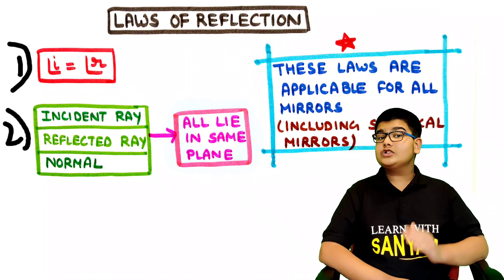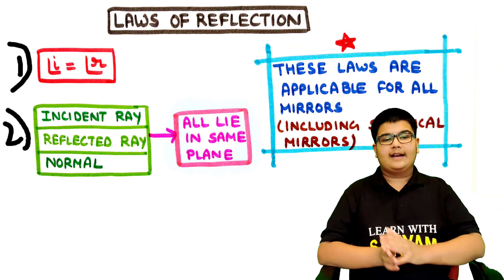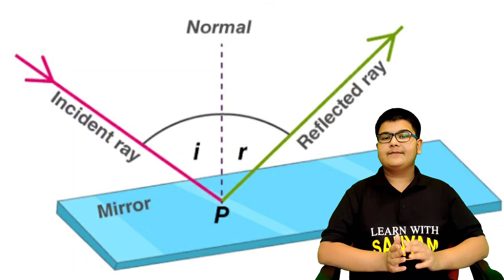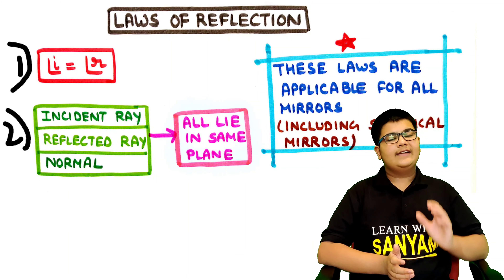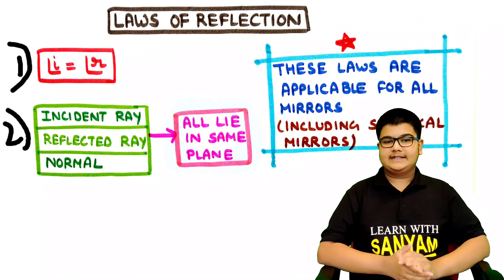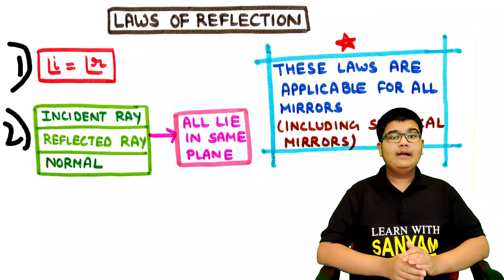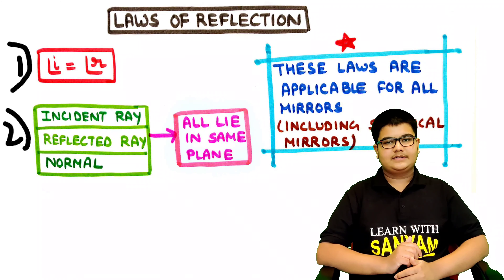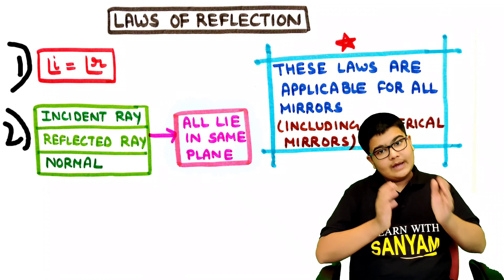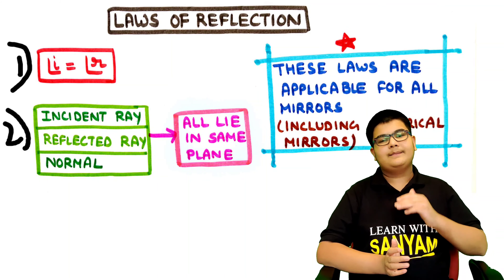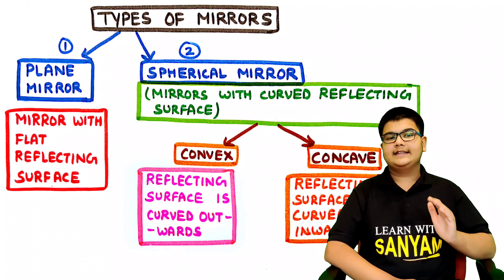Now after learning about all the terms associated with reflection of light, let's understand the laws of reflection. The first law is that angle i is equal to angle r — that is, the angle of incidence is always equal to the angle of reflection. Second, the incident ray, the reflected ray, and the normal at the point of incidence all lie in the same plane. These laws are applicable for all mirrors, including spherical mirrors — not just plane mirrors.